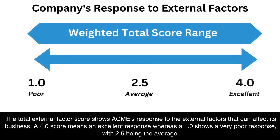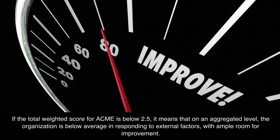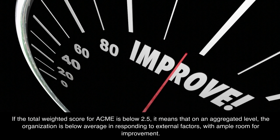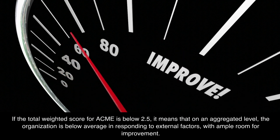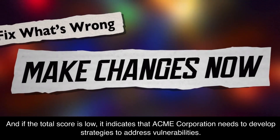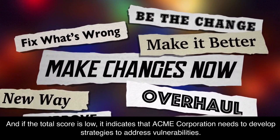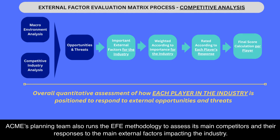Step 1: Macro Environment Analysis. Acme Corporation initiates a comprehensive macro environment analysis by reviewing data and information from various sources such as industry reports, market research, government publications, and trade associations. This analysis helps them understand economic trends, social and cultural influences, demographic changes, natural factors, political and governmental aspects, legal considerations, and technological advancements that could impact their industry and the company. These findings are translated into potential opportunities or threats to be considered during the strategic planning process.